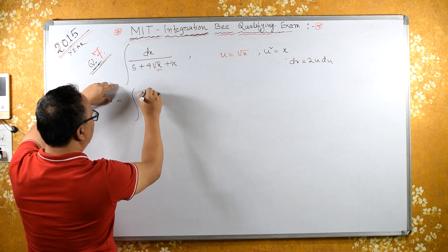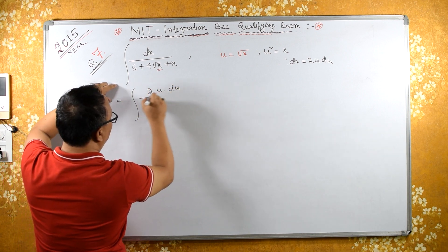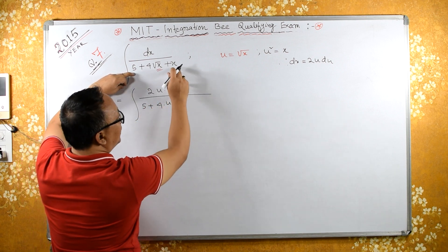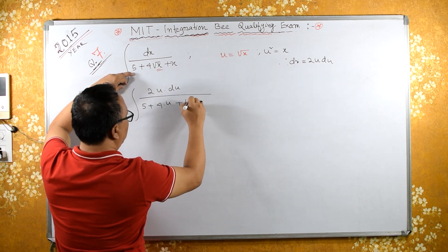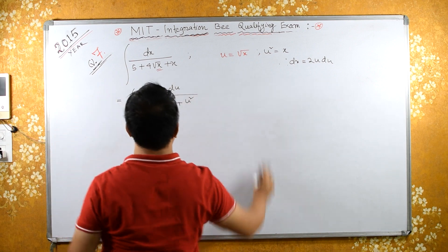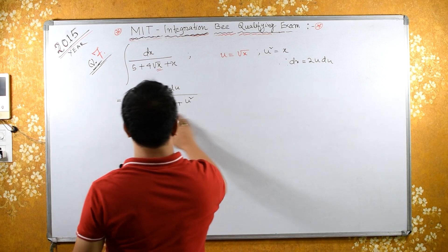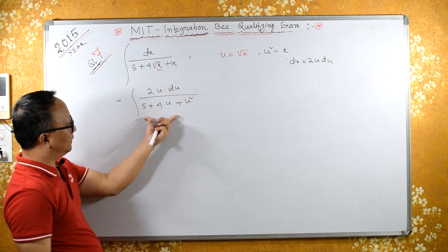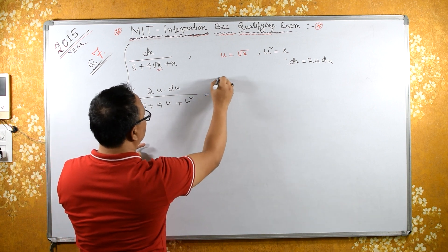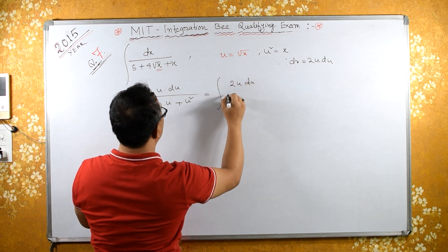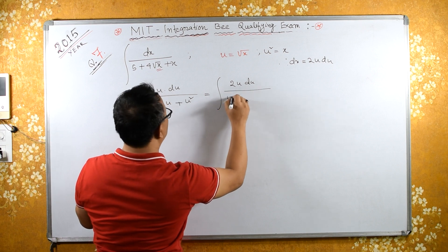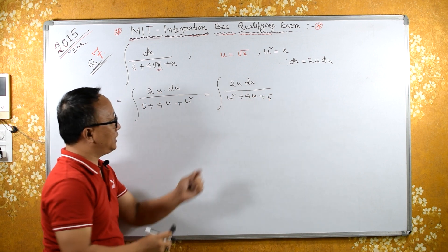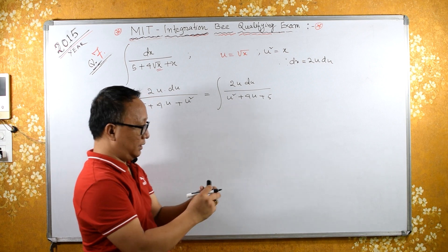Substituting, the integral becomes: 2u du upon 5 plus 4 root x plus x. Since root x is u and x is u squared, this simplifies to 2u du upon u squared plus 4u plus 5. Let's write this once again: 2u du upon u squared plus 4u plus 5.